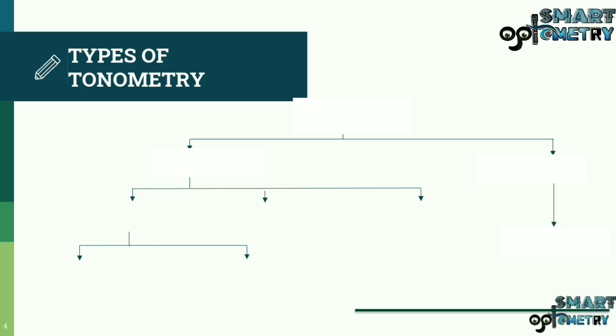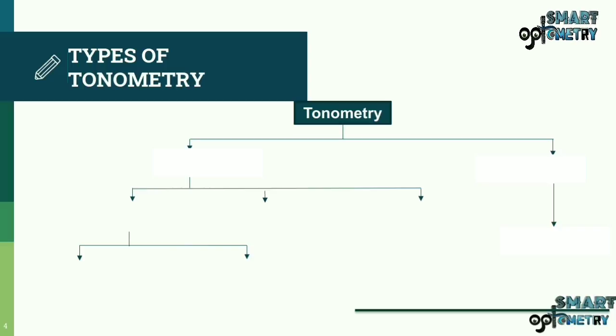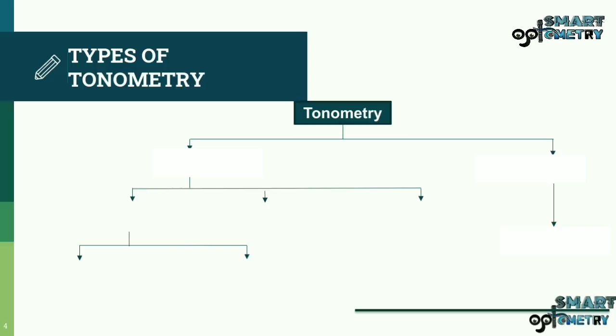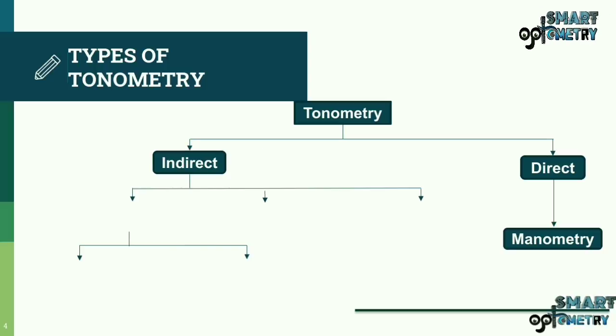As shown in this slide, tonometry is basically divided into two types: Direct and Indirect.